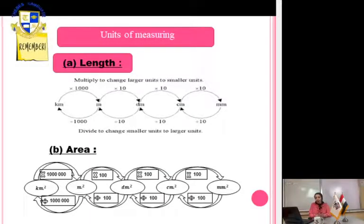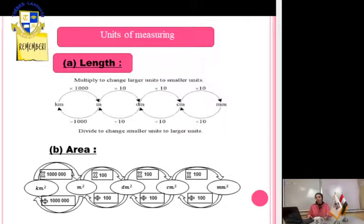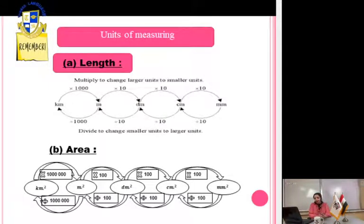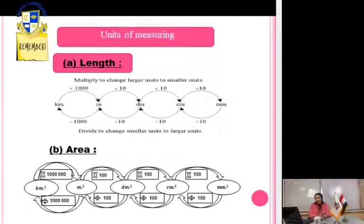To convert from small unit to bigger unit, divide: millimeter to centimeter ÷10, centimeter to decimeter ÷10, decimeter to meter ÷10, meter to kilometer ÷1000. The second type of measuring units is area: kilometer², meter², decimeter², centimeter², and millimeter².